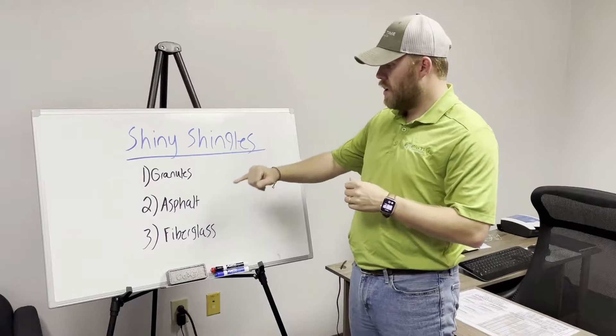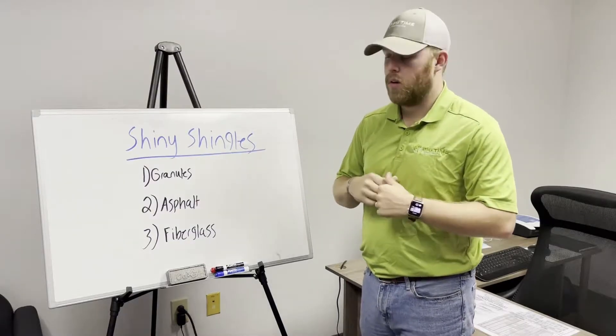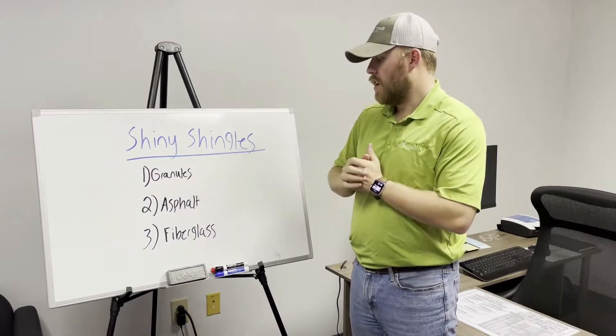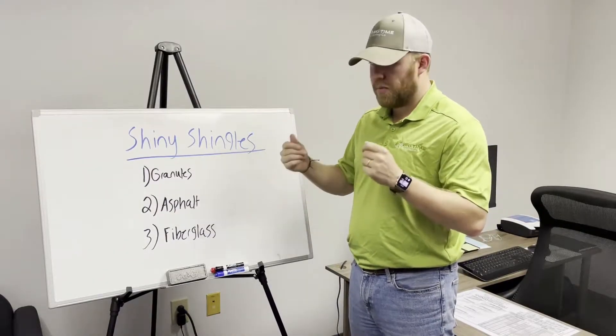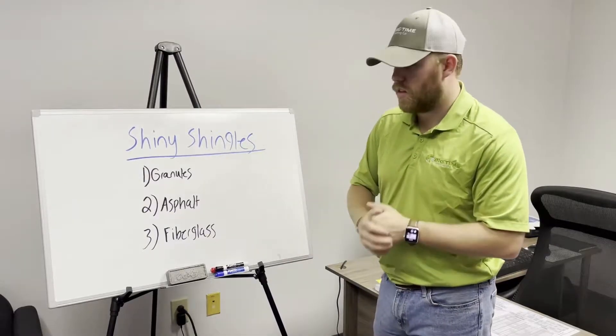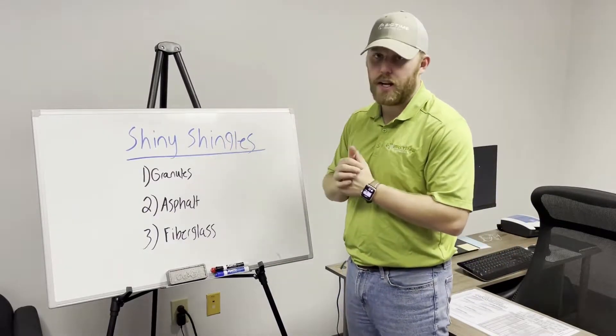Alright guys, so there's three main components to a shingle. There's a couple more, but these are just the three big ones. You have your granulates, you have your asphalt, the black part that the shingle's actually made out of, and then you have the fiberglass mat underneath, which is what the asphalt's poured on and the granulates are set in.